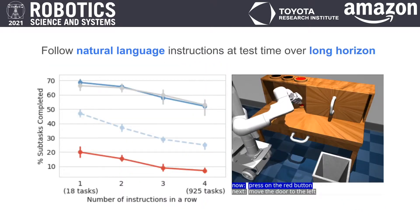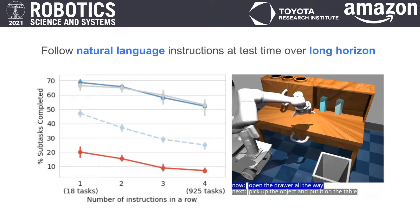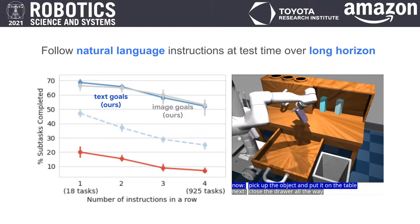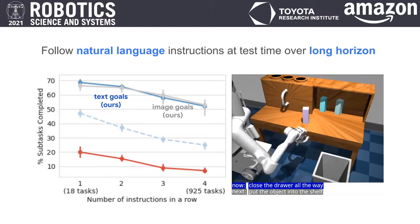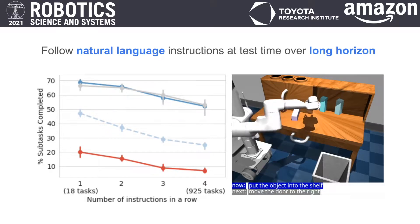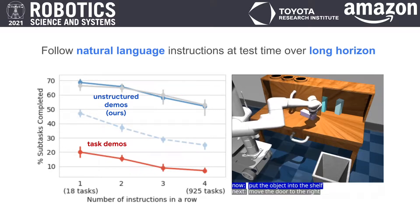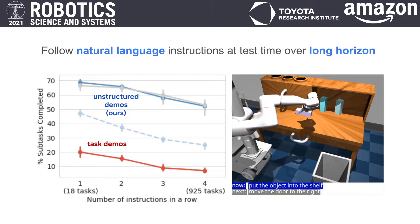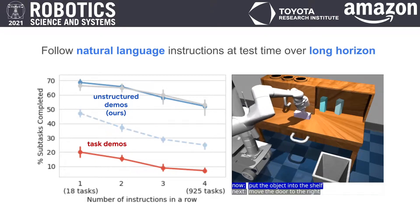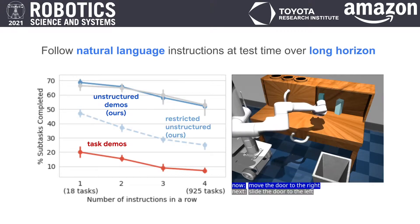We evaluate our models on over 900 long-horizon visual manipulation tasks, covering 18 task families. We see that our more flexible text conditioned models can achieve the same performance as prior work which requires goal images, with less than 1% language annotation. Additionally, we see that despite training on unstructured demonstration data sets with no task labels, our method outperforms baselines trained on conventional multitask demonstrations. This remains true even when the unstructured data, which has a much higher collection throughput, is restricted to the same size.